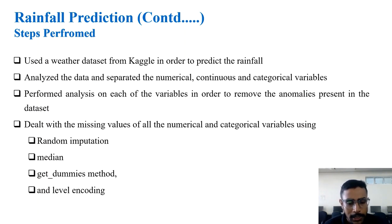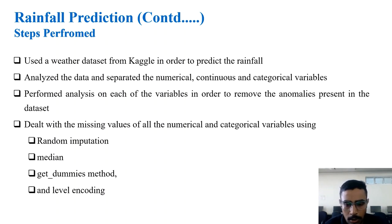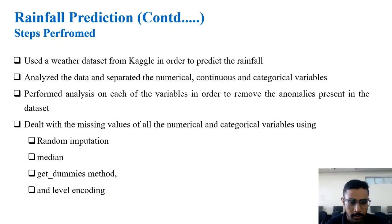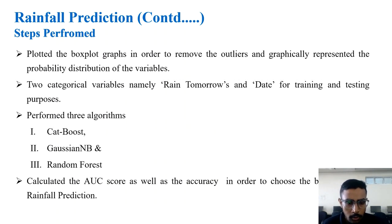We used a dataset from Kaggle, analyzed the data, and separated numerical continuous as well as categorical variables. We performed analysis on each variable to remove anomalies, dealt with missing values using random imputation, median method, get dummies method, and label encoding method. We plotted box plots to remove outliers and graphically represented the probability distribution of the variables.